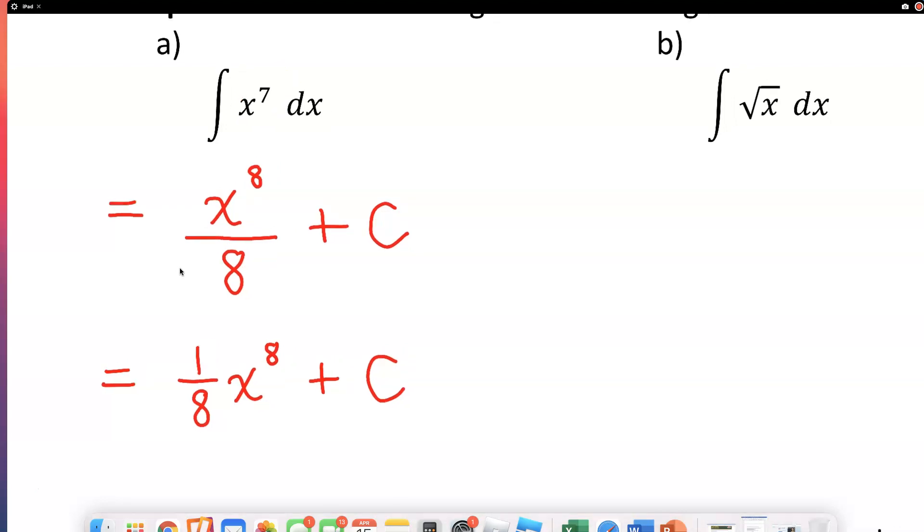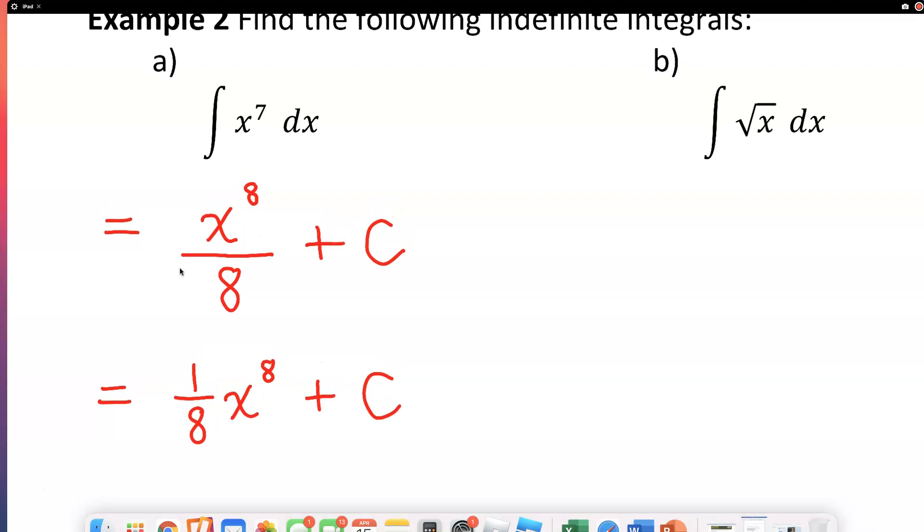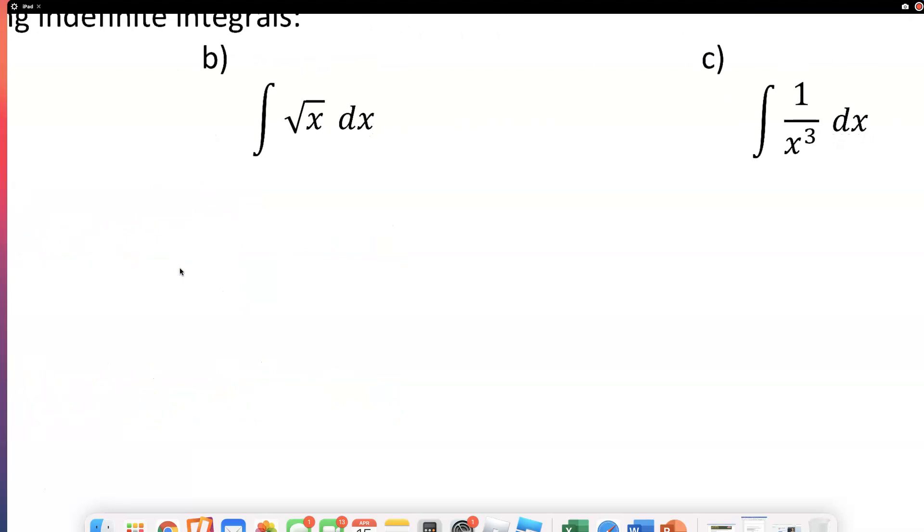Let's look at another one. B isn't exactly written with an exponent so I'm gonna rewrite B. For this one I will rewrite this as x to the one half power and let's find the antiderivative of that.